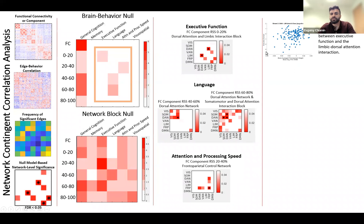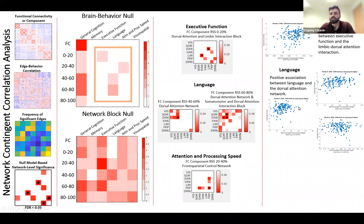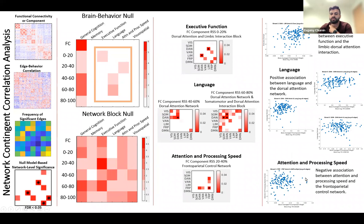If we visualize the average functional connectivity component values on the x-axis against the cognitive score on the y-axis, we can see the executive domain relationship was predominantly positive. For the language domain, these relationships were again largely positive. In cases where a block was significant but doesn't look like it, this is because this is a frequency statistic, so the network average data may not necessarily reflect the full direction of the relationship. Finally, for attention and processing speed in the frontal parietal control network, the relationship was predominantly negative.